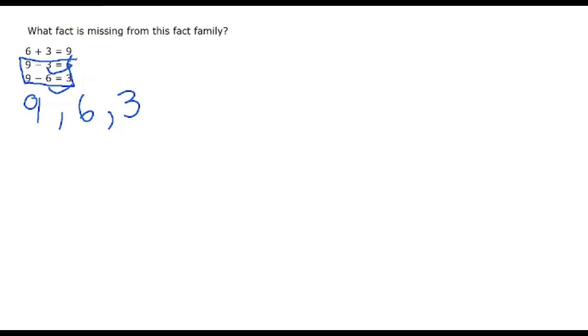We know that the missing sentence is another addition sentence. In my previous video, we know that the related addition fact to 6 plus 3 equals 9 is getting these two to switch places. So, 3 plus 6 equals 9 is the related addition fact, and it is the missing addition sentence from this fact family.